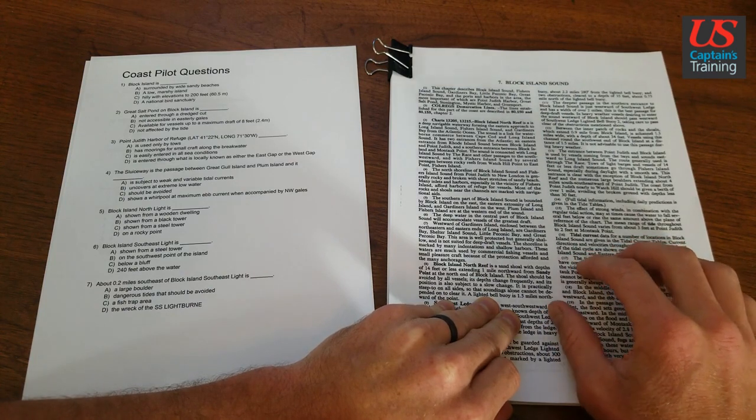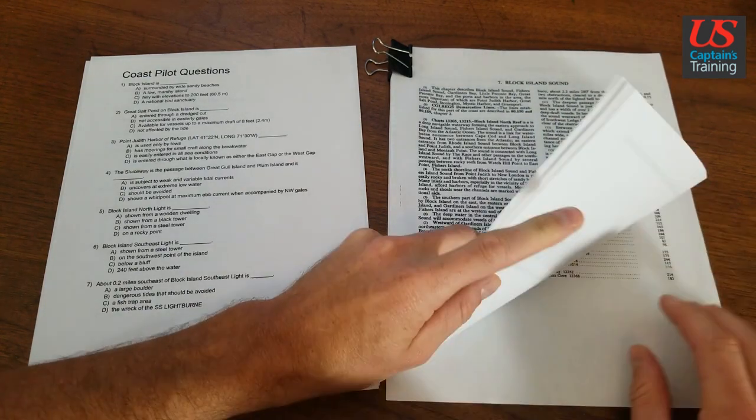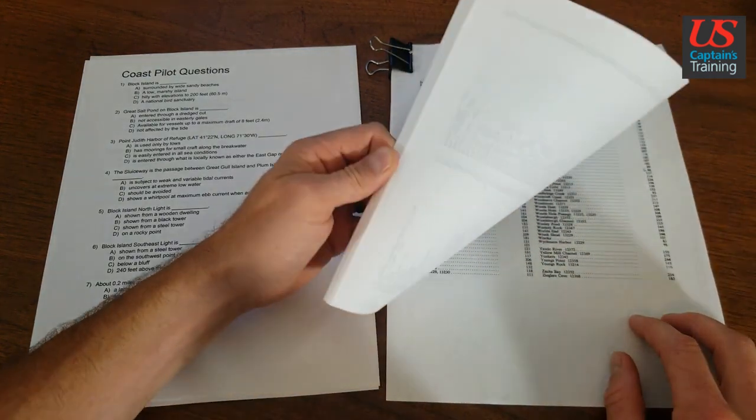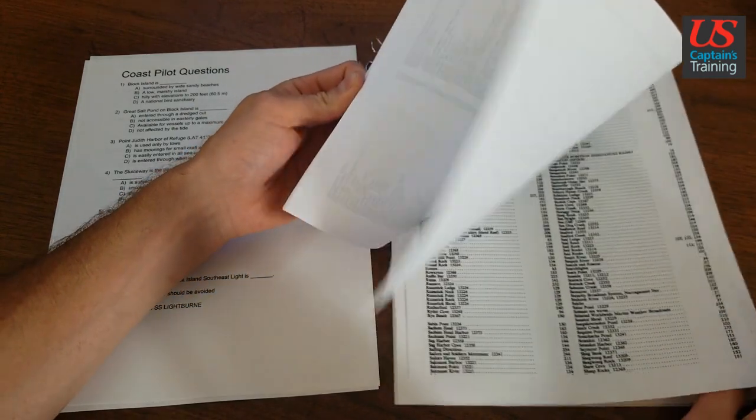This is an excerpt from the Coast Pilot, by the way. We're headed to the index and we're going to look up Block Island. So we need to be in the B's.